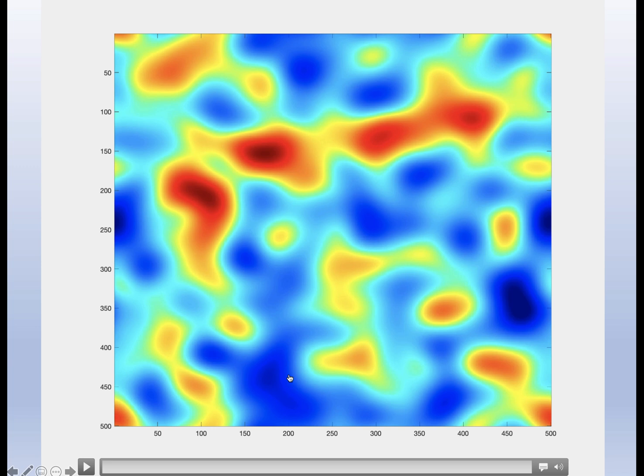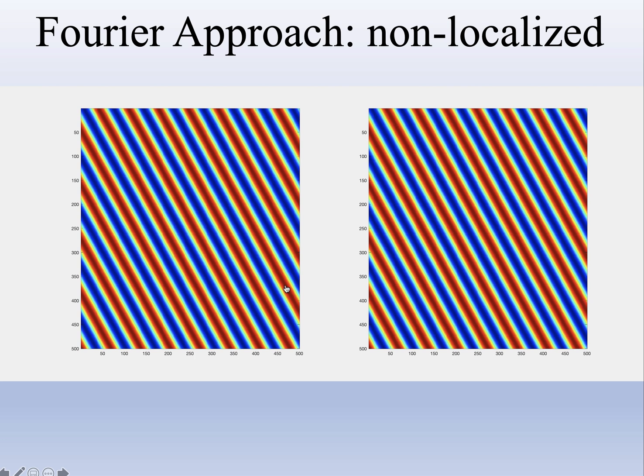What we see are these patches of high intensities and other patches of low intensities. What we want to do is create computer programs that can generate or simulate these kinds of patterns. This is really about computer-generating speckle patterns.